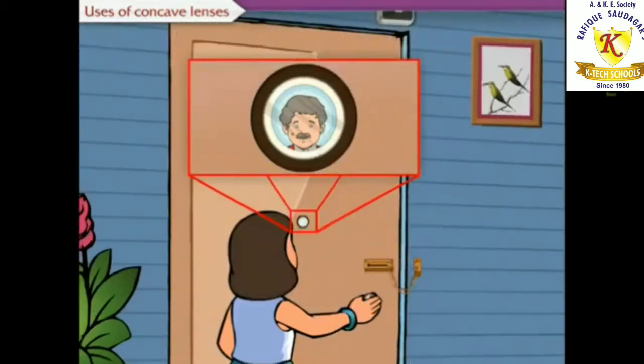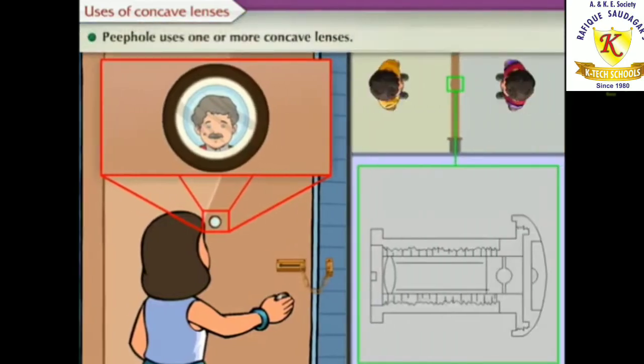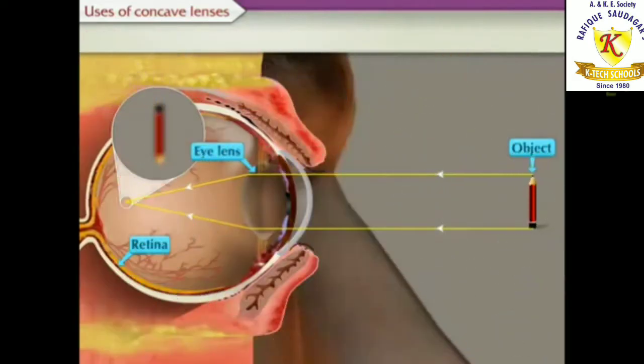The peephole in the door is a small safety device which helps us to see a large area outside the door. This uses one or more concave lenses.